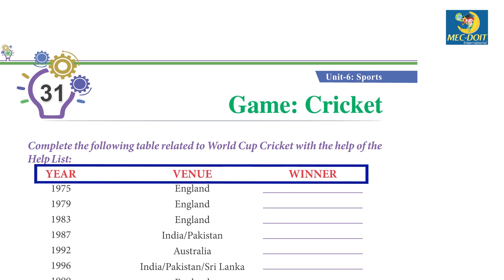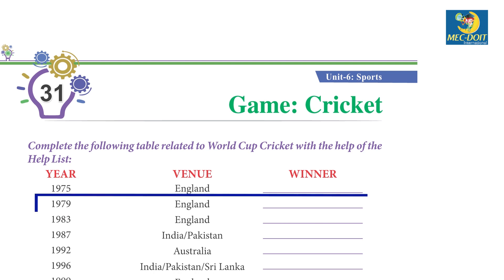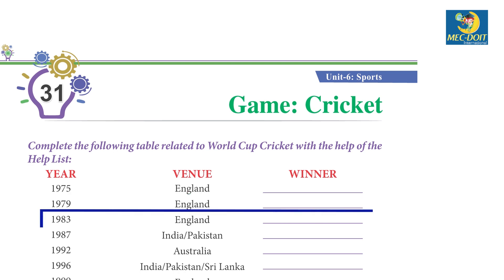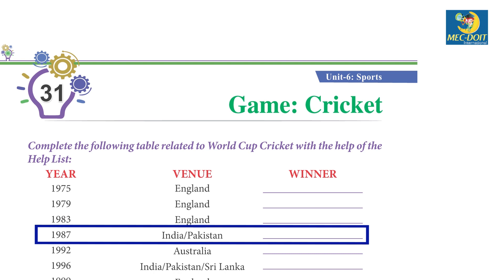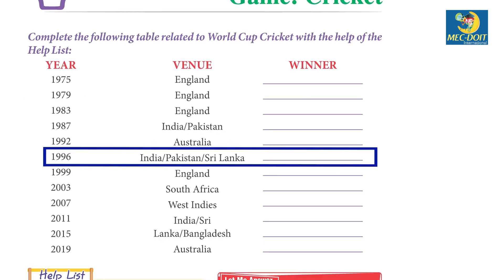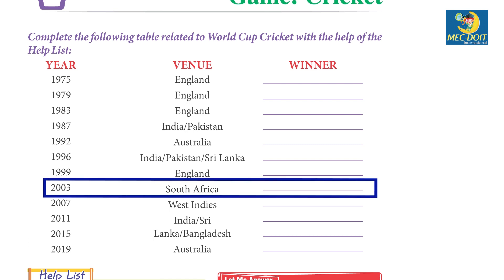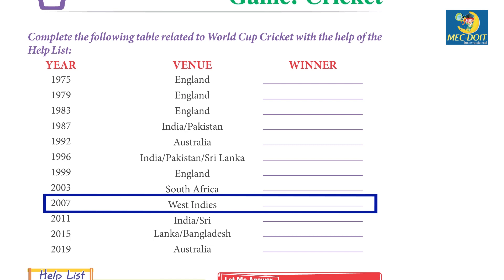Year, venue, winner: 1975 England – West Indies; 1979 England – West Indies; 1983 England – India; 1987 India/Pakistan – Australia; 1992 Australia – Pakistan; 1996 India/Pakistan/Sri Lanka – Sri Lanka; 1999 England – Australia; 2003 South Africa – Australia; 2007 West Indies – Australia.